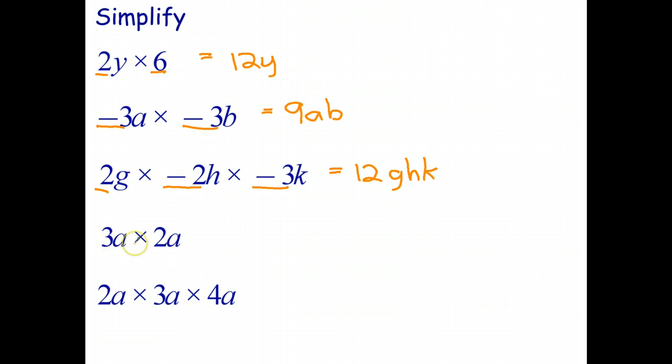This one's slightly different. Again, we multiply the numbers together first. 3 times 2 is 6.